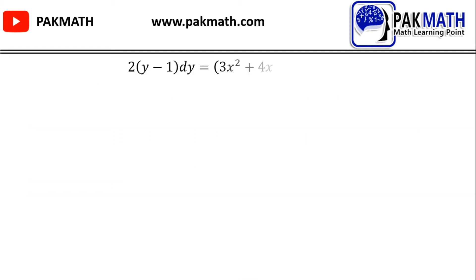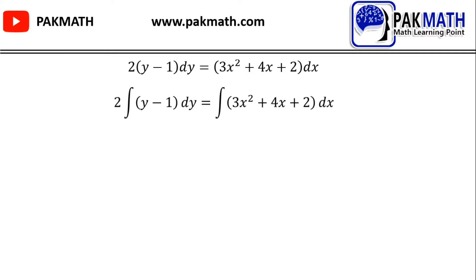As given, the equation is 2(y − 1) dy = 3x² + 4x + 2 dx. So we will take integration on both sides. We get: 2∫(y − 1) dy = ∫(3x² + 4x + 2) dx.